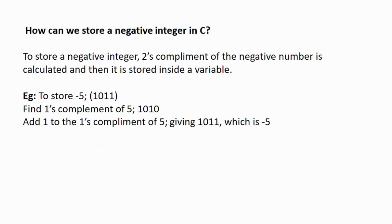Next question: how can we store a negative integer in C? To store a negative integer, the 2's complement of that number is calculated first, and then that value is stored inside the variable. For example, to store -5: the binary value of 5 is 0101. The 1's complement of 5 is 1010. Then 1 is added to the 1's complement, giving 1011, which is the binary representation of -5.